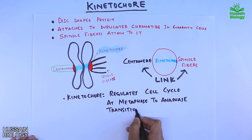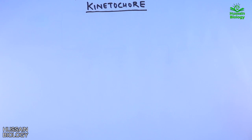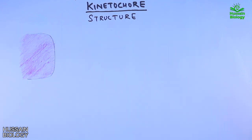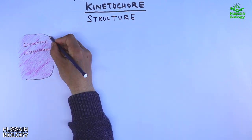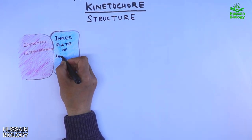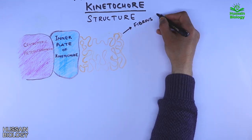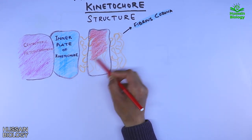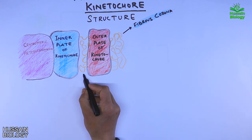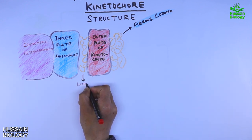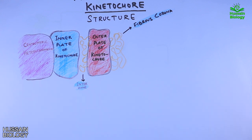Kinetochore proteins regulate the metaphase to anaphase transition. Now let's look at the molecular structure of the kinetochore. First, we have the centromere heterochromatic region — this is not part of the kinetochore but is the site on the chromatid where the kinetochore attaches. The first element of the kinetochore is the inner plate, then the fibrous corona, the outer plate, and between the inner and outer plates we have the interzone.